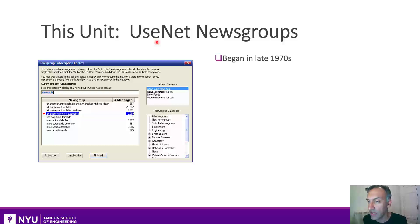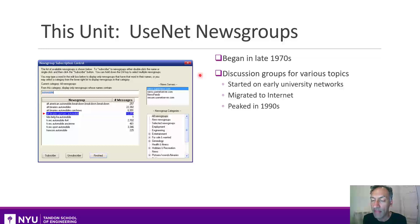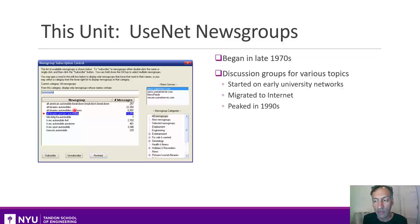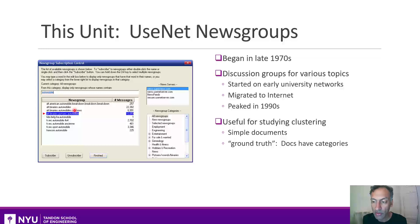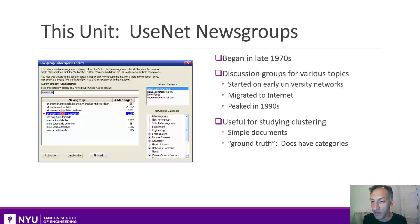Usenet newsgroups began in about the late 1970s, so they're really at the very early part of electronic computer networks. At that time, they were discussion groups on various topics. Here you can see the interface that existed at that time — you could post to various automobile categories like 4x4s, car shows, and so on. They peaked in the 1990s, but for our purpose it's actually a very useful corpus to work with, because the documents are fairly simple, there's not an enormous number of them, but enough to have interesting results.